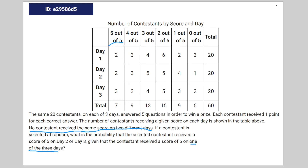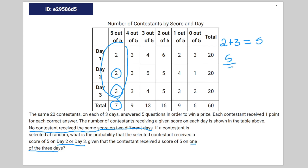So really you just have to focus on these three data points right here. We're going to look at day two and day three — that's going to be two and three for day two and day three respectively. Two plus three equals five, and you put that over the total amount of people that got five out of fives, which is given to be seven. So that's a five out of seven chance.